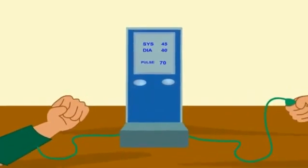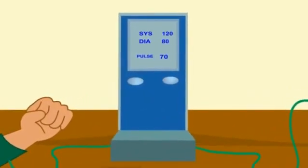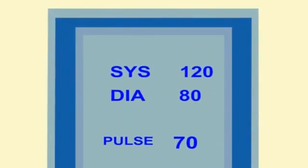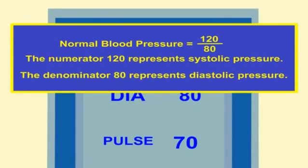The BP is measured by sphygmomanometer. It is written in the format 120 by 80. This is the normal blood pressure. The numerator 120 represents systolic and the denominator gives diastolic pressure.